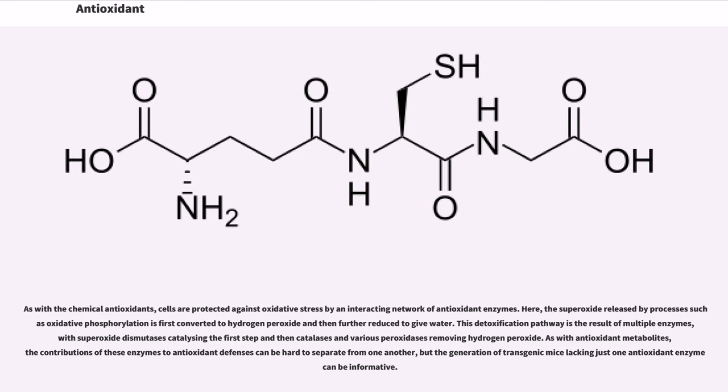As with the chemical antioxidants, cells are protected against oxidative stress by an interacting network of antioxidant enzymes. Here, the superoxide released by processes such as oxidative phosphorylation is first converted to hydrogen peroxide and then further reduced to water. This detoxification pathway is the result of multiple enzymes, with superoxide dismutases catalyzing the first step and then catalases and various peroxidases removing hydrogen peroxide. As with antioxidant metabolites, the contributions of these enzymes to antioxidant defenses can be hard to separate from one another, but the generation of transgenic mice lacking just one antioxidant enzyme can be informative.